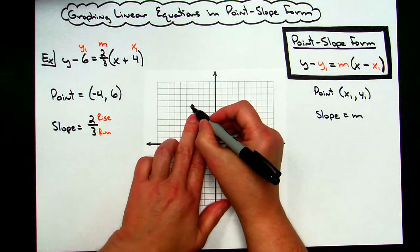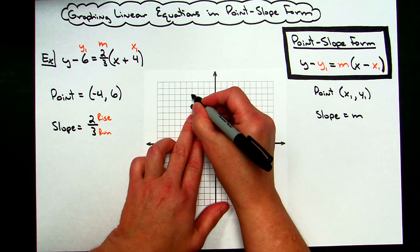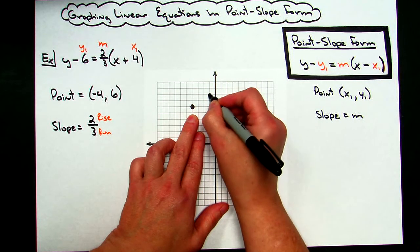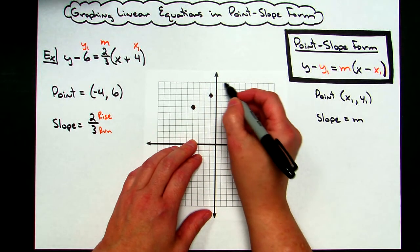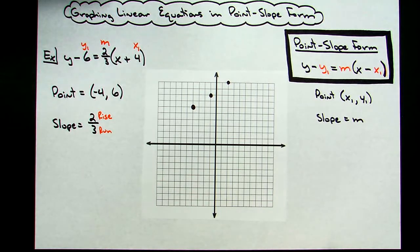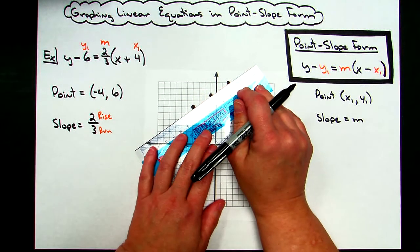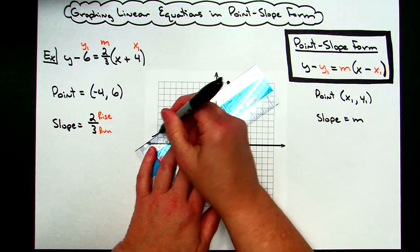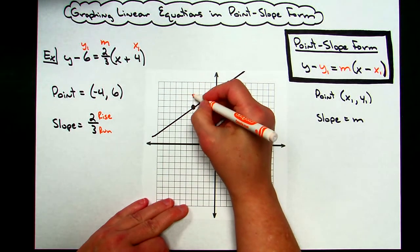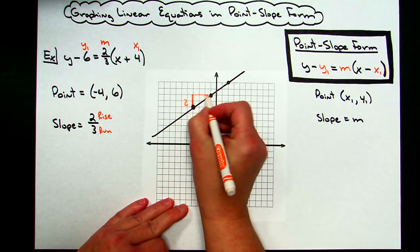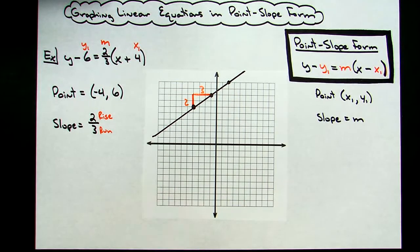From the point that I've just generated, I'm going to rise 2 and run 3: 1, 2, 3, and that gives me a second point. You can put more than one point on if you wanted. You'd rise 2 and then run 3, and that's going to give you another point if you want your line to be a little bit more accurate. Then you're going to connect your dots. And graphing a linear equation in point slope is that simple. Let's clearly show where our rise was. Our rise was a 2, and our run was a 3. So there is a quick and easy method for graphing a linear equation in point slope form.